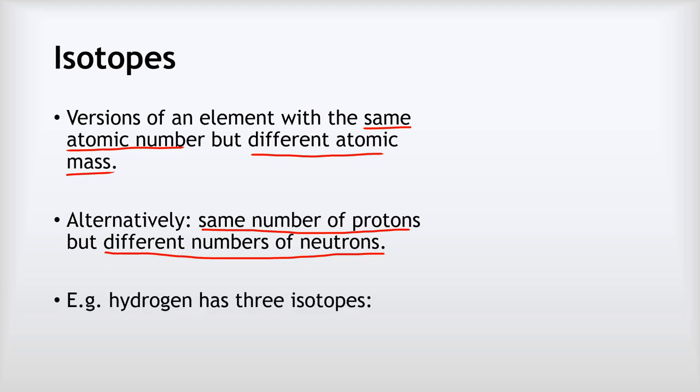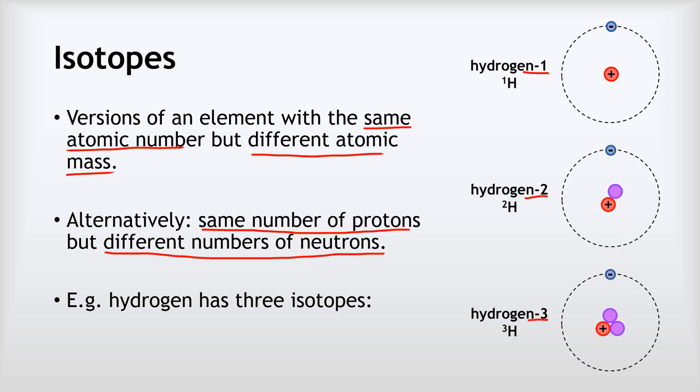For example, if we look at hydrogen, hydrogen's got three isotopes. There's hydrogen-1, hydrogen-2, and hydrogen-3. These numbers here, when we name them, this is just the mass of each one. So hydrogen-1's got a mass of 1, hydrogen-2's got a mass of 2, hydrogen-3's got a mass of 3, and so on.